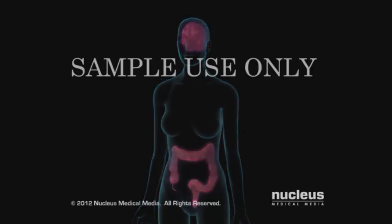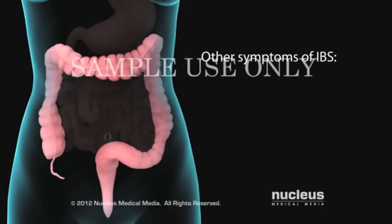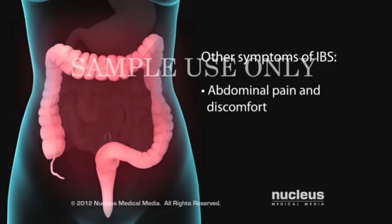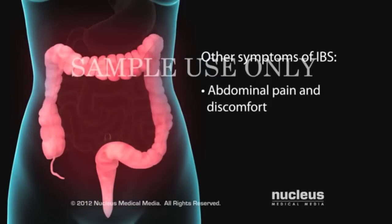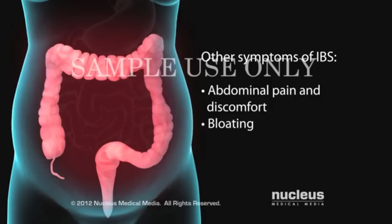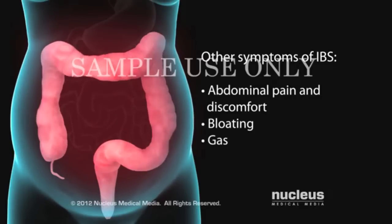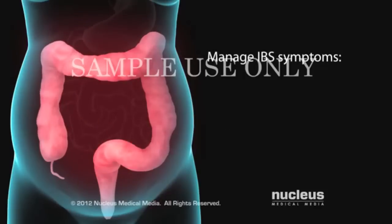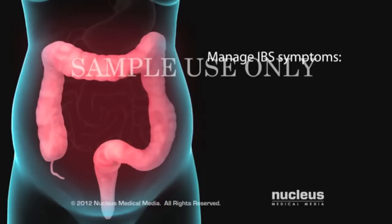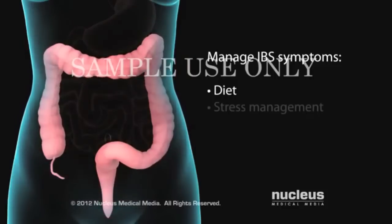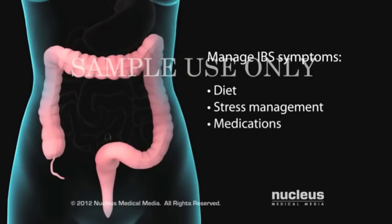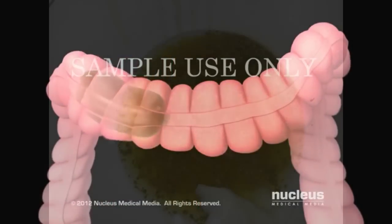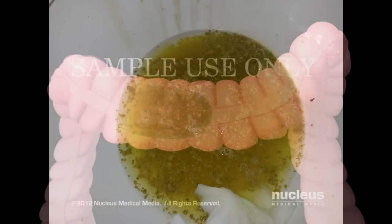A person becomes constipated, but at the same time, his or her intestines are being burned. When enough acids build up and the intestines can't take it anymore, they purge themselves with a bout of diarrhea. Then, with the acids evacuated, the process starts all over again. If you are experiencing problems with constipation, diarrhea, or both, biliary sludge and gallstones could be the cause.